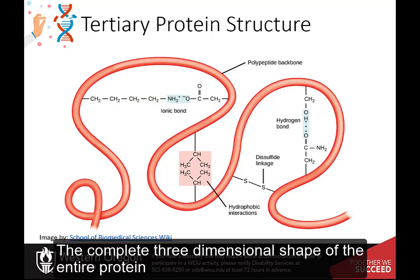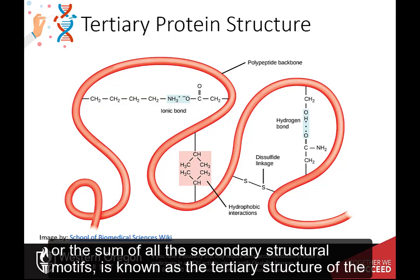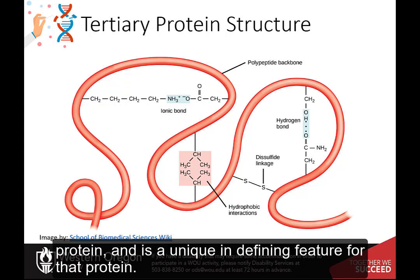The complete three-dimensional shape of the entire protein, or the sum of all the secondary structural motifs, is known as the tertiary structure of the protein and is a unique and defining feature for that protein.